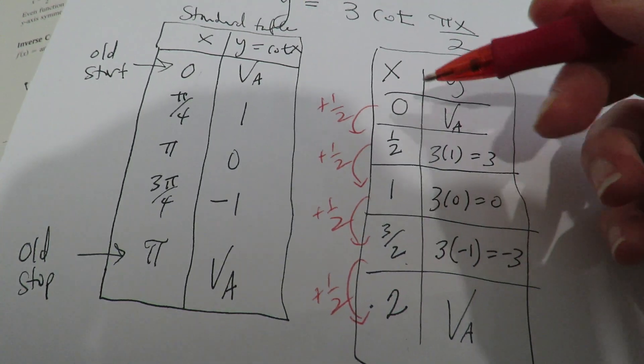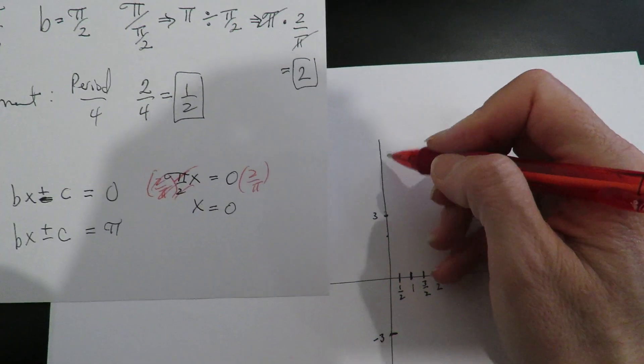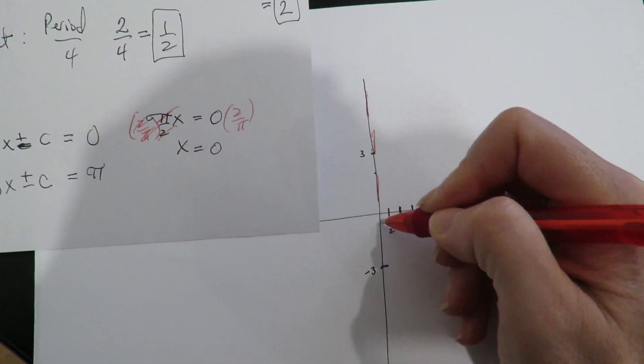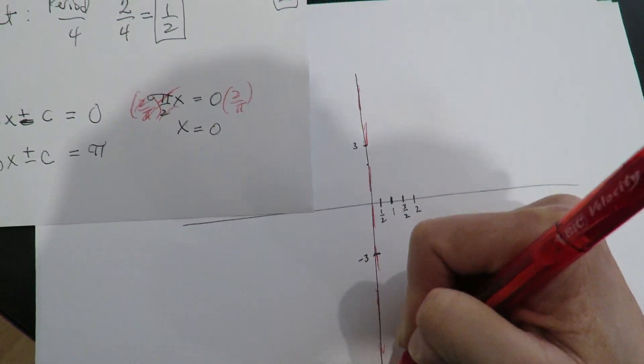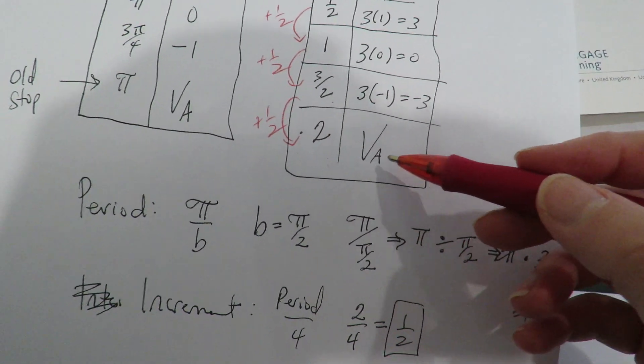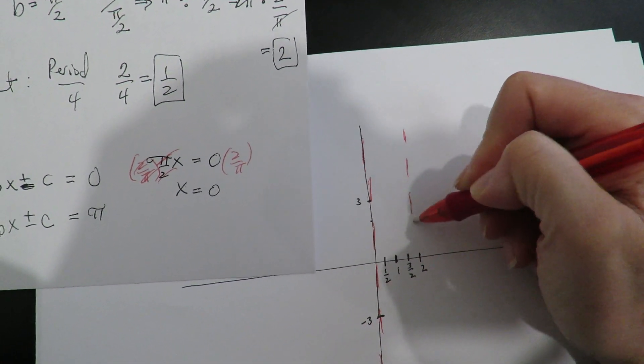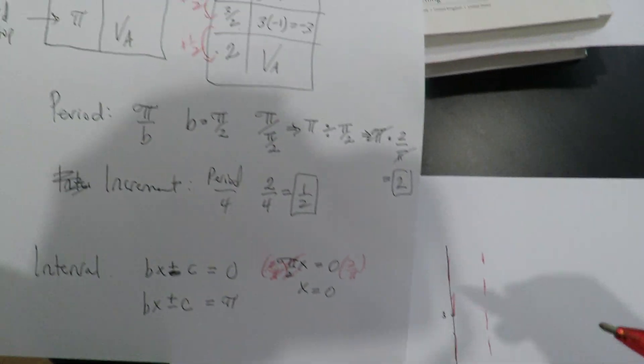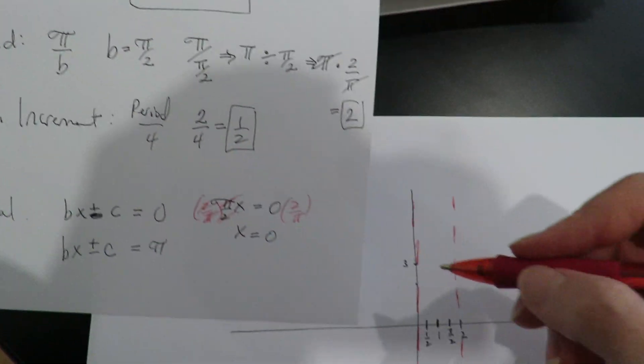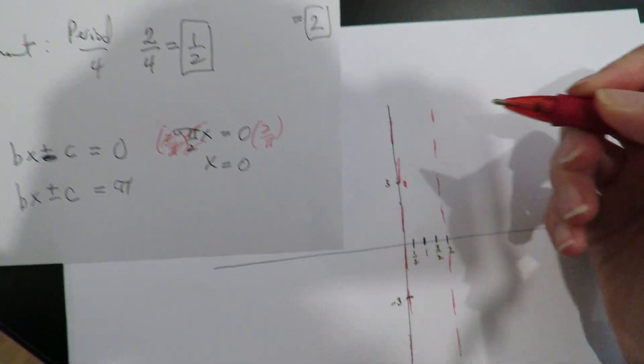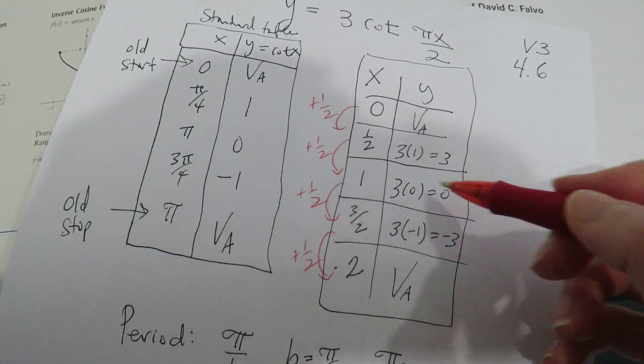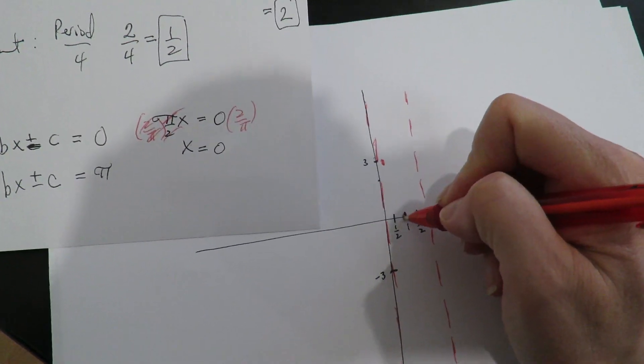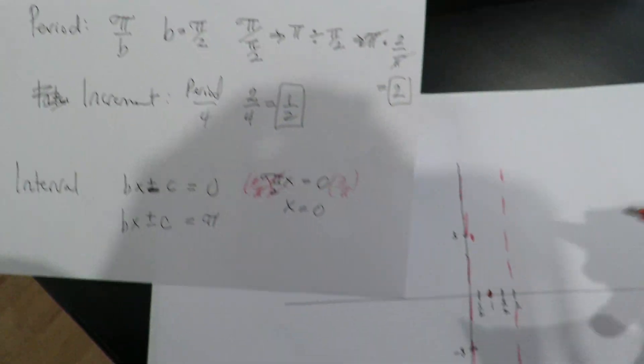Now I'm just going to follow the table. So at 0, I have a vertical asymptote. At 2, I have a vertical asymptote. At 1 half, I'm at 3. At 1, I'm at 0. At 3 halves, I'm at negative 3.